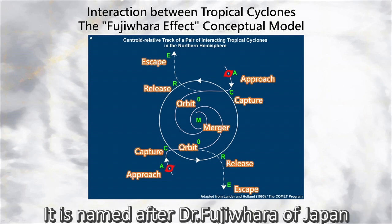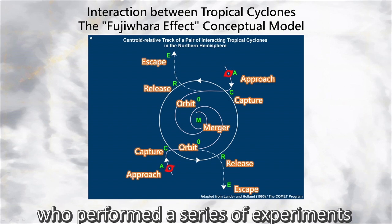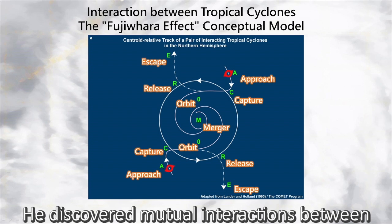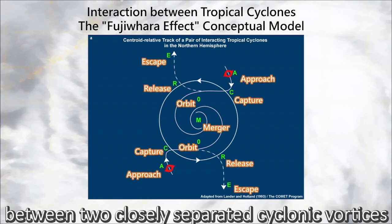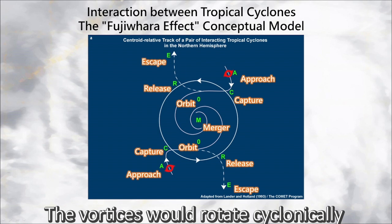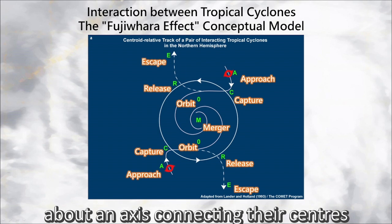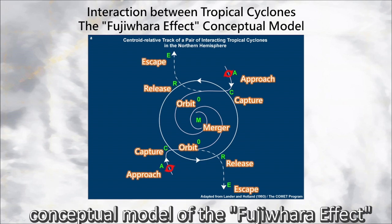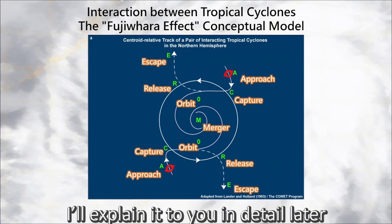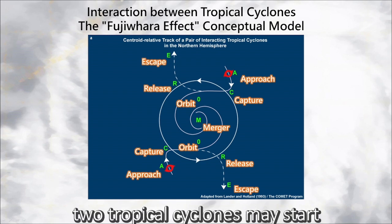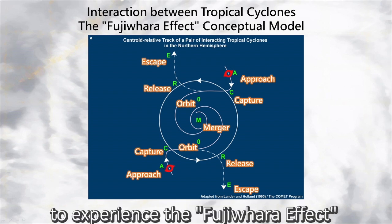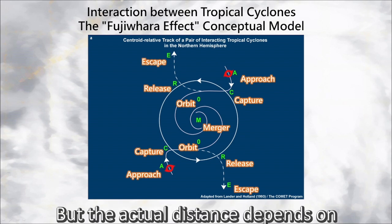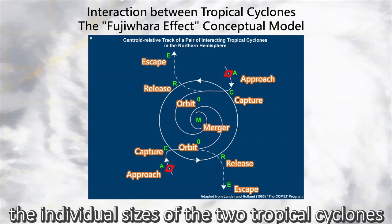The Fujiwara effect is named after Dr. Fujiwara of Japan, who performed a series of experiments and observations on vortices in the 1920s. He discovered mutual interactions between two closely separated cyclonic vortices — the vortices would rotate cyclonically about an axis connecting their centers. This figure summarizes the whole conceptual model of the Fujiwara effect, which I'll explain in detail later. In general, two tropical cyclones may start to experience the Fujiwara effect when the distance between them is less than 1200 km, though the actual distance depends on the individual sizes of the two tropical cyclones.